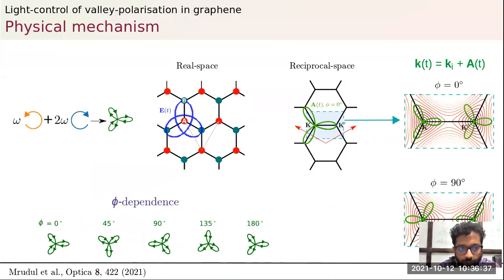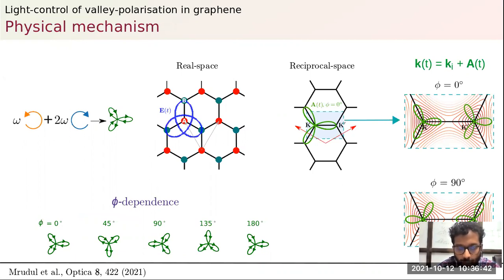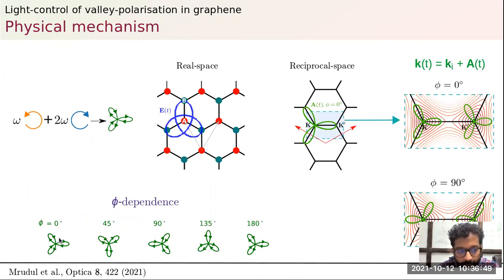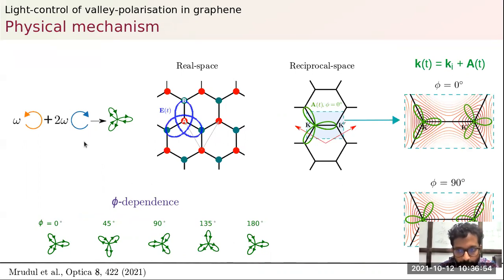For that we use a field which is the resultant of two counter-rotating circular pulses. The resultant field looks like a trefoil, and the rotation of this trefoil can be done by adjusting the relative phase between the two fields.